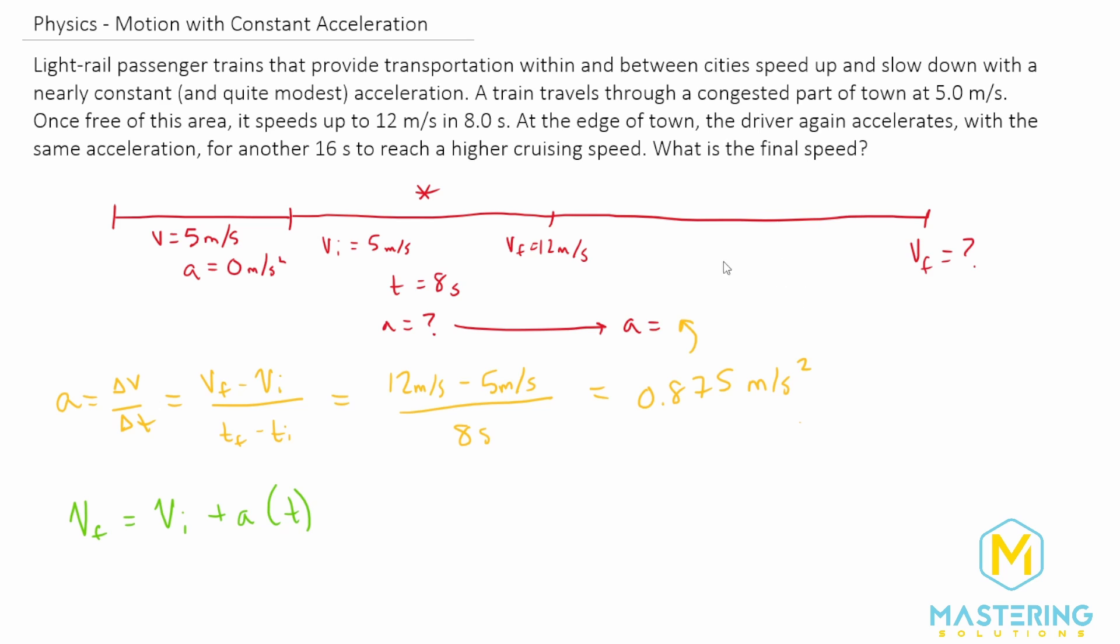And I forgot to label one thing. They tell us the time for this last section is 16 seconds. So now we can solve for the final velocity, and it's already given for what we need, so we don't even have to rearrange the formula. So V final equals the initial velocity, which is 12 meters per second.